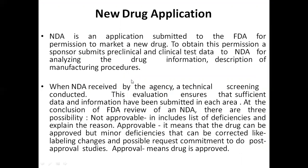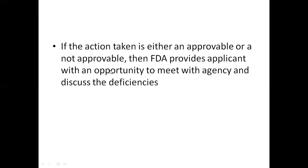A New Drug Application (NDA) is submitted to the FDA — Food and Drug Administration — for permission to market a new drug. The sponsor submits pre-clinical and clinical test data, drug information, description of manufacturing procedures, and other required data. When the NDA is received, a technical screening is conducted to ensure sufficient data has been submitted. At the conclusion of FDA review, there are three possible outcomes: Not Approvable — a list of deficiencies is provided explaining why it was not approved; Approvable — the drug can be approved with minor deficiencies such as labeling changes or post-approval study commitments; and Approval — the drug is fully approved. If the action is either approvable or not approvable, the FDA provides the applicant an opportunity to meet with the agency and discuss the deficiencies.